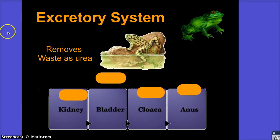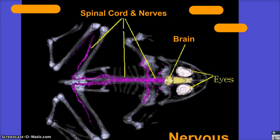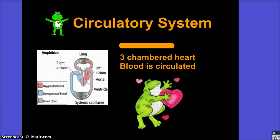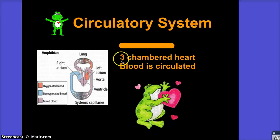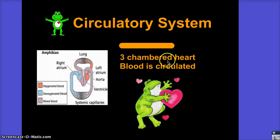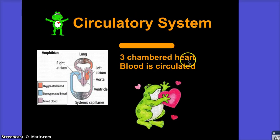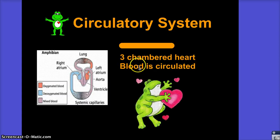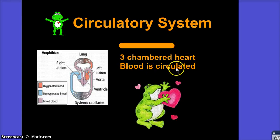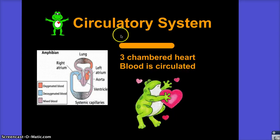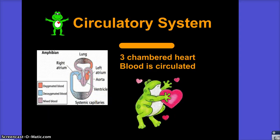Lastly is the circulatory system. You want to remember that frogs have a three-chambered heart and that blood is circulated through the circulatory system. Later we'll get more advanced and learn about the veins, arteries, capillaries, and things of that nature.